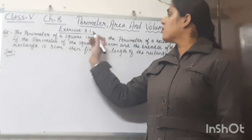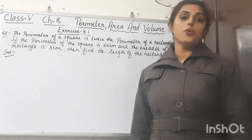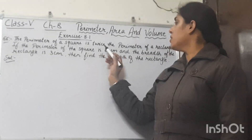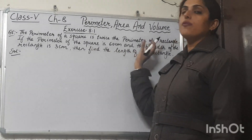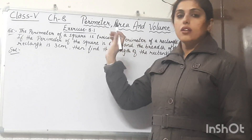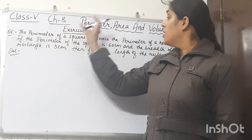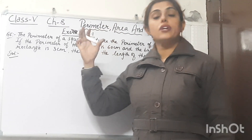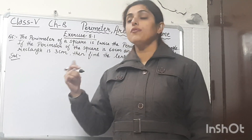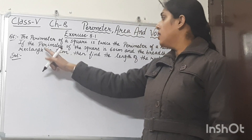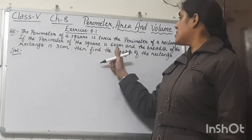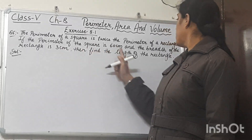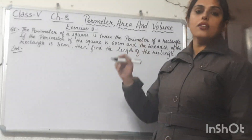Let's start question number 6 of exercise 8.1. The perimeter of a square is twice the perimeter of a rectangle. The perimeter of a square is 60 cm, breadth is 3 cm, and we have to find the length of the rectangle.